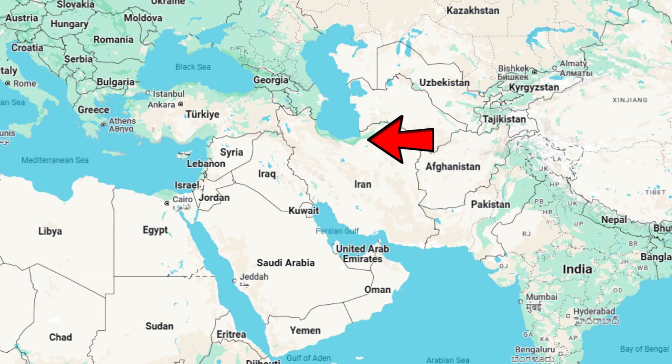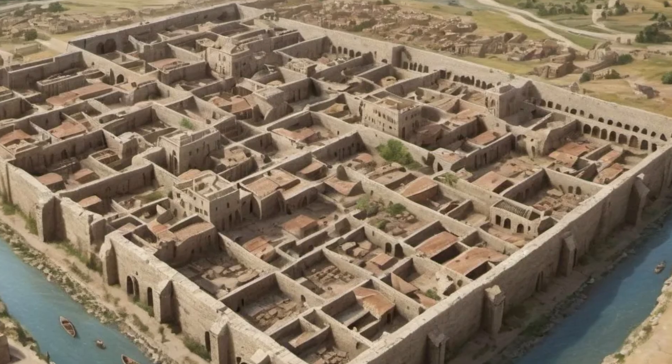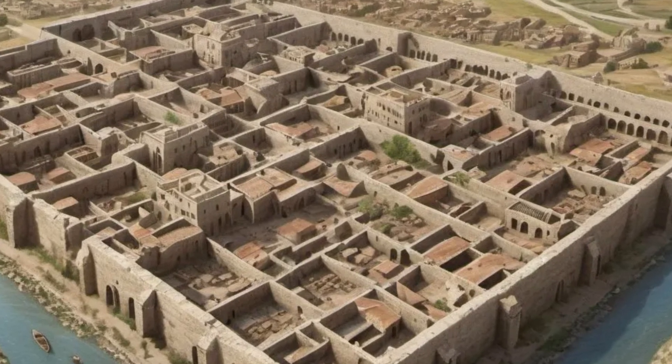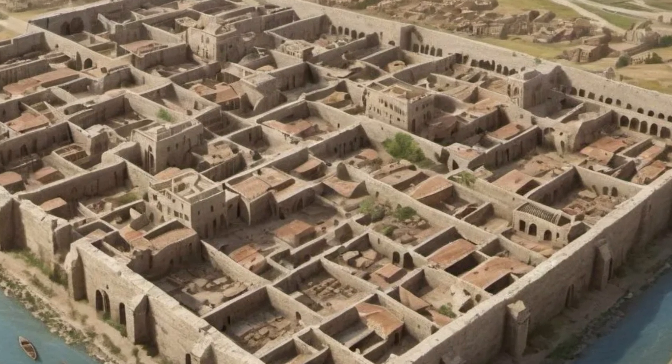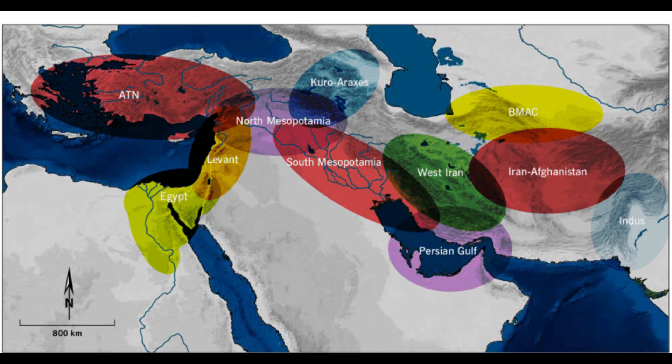Shah Tepe, a key archaeological site in northeastern Iran, was a significant settlement during the Bronze Age, reflecting the dynamic interplay of cultures in the region. The inhabitants of Shah Tepe were part of a larger network of early urban and rural societies, sharing similarities with the Bactria-Margiana Archaeological Complex, abbreviated as BMAC, to the northeast.